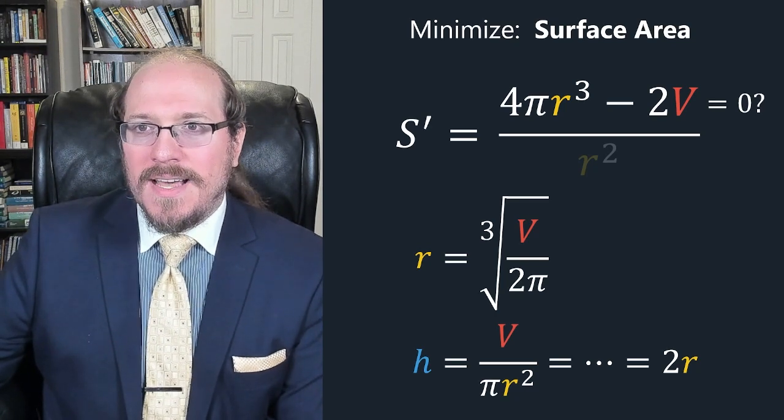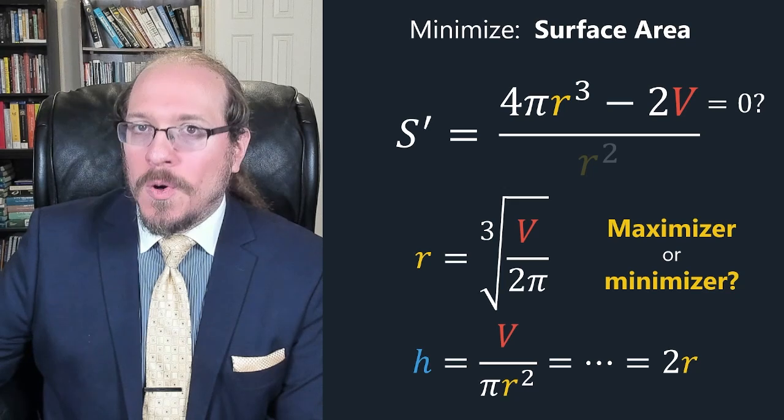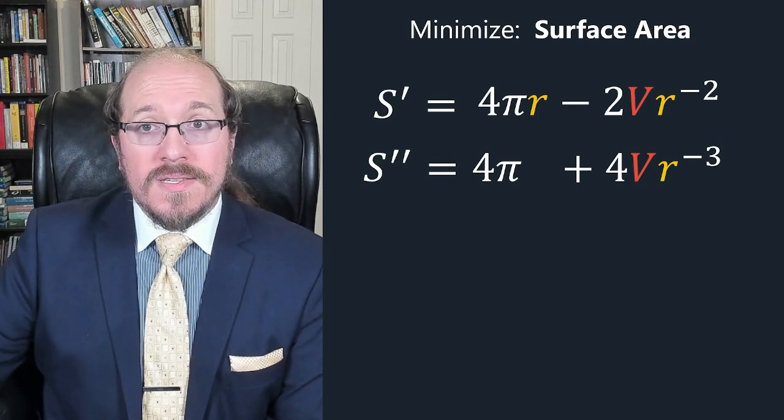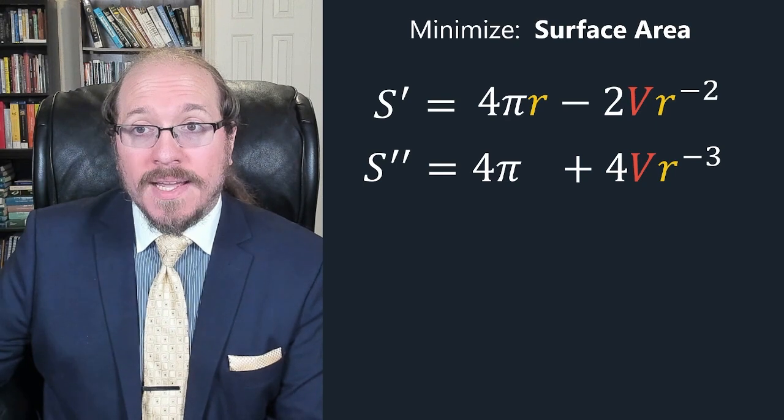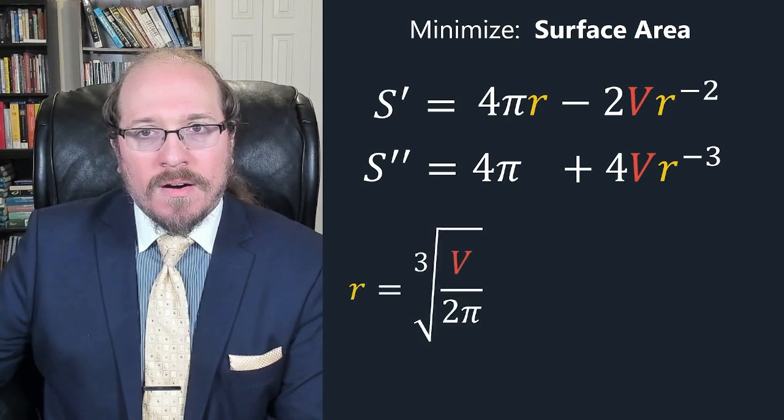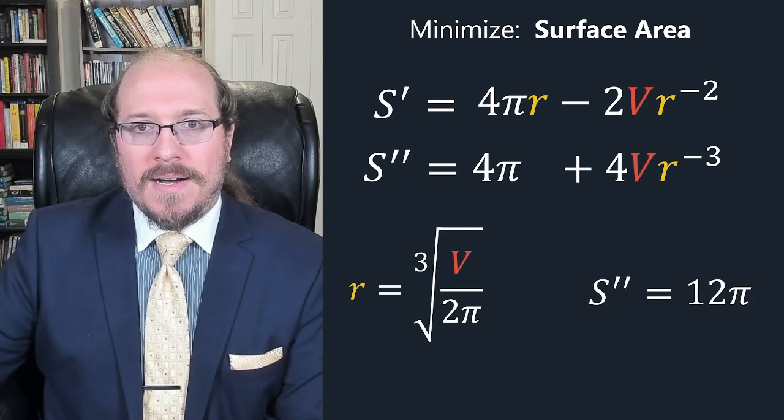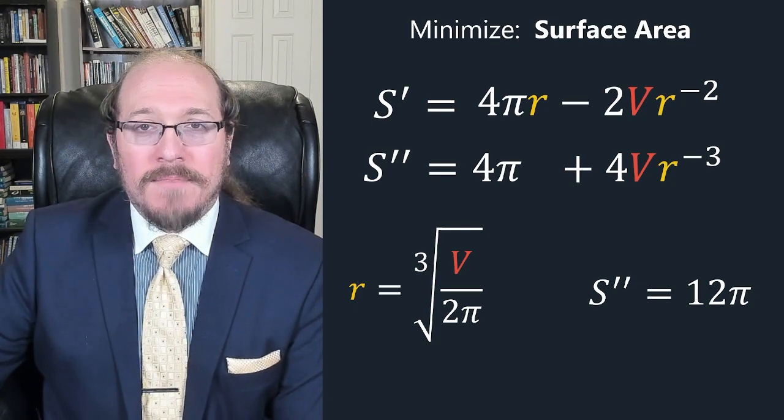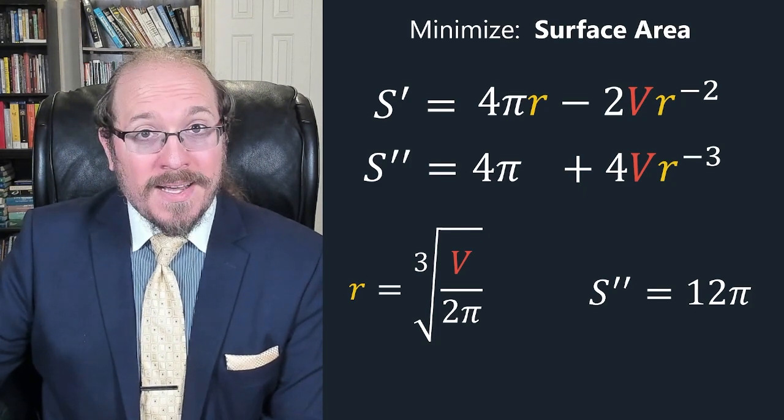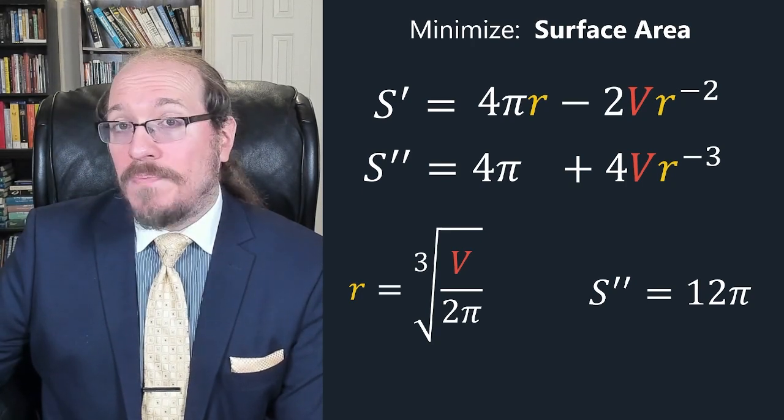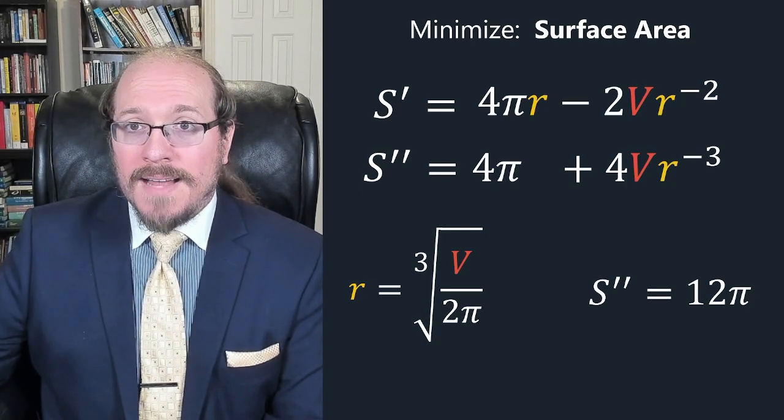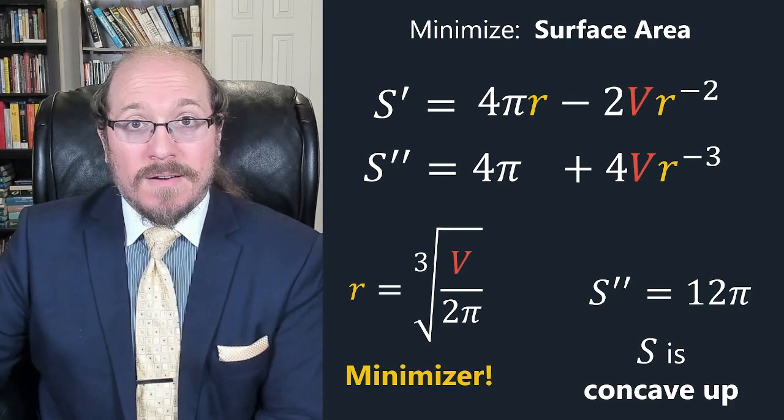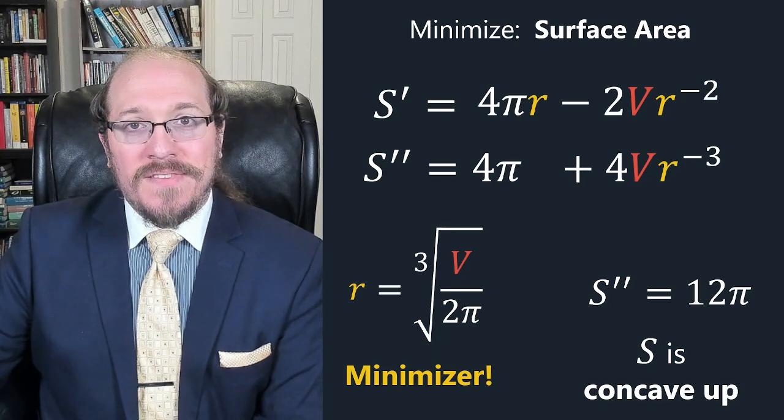But wait a minute we do have to check is that value of r a maximizer or a minimizer? Well if we take the second derivative of surface area we get 4π plus 4V r^(-3). Plugging in cube root of V over 2π for r we end up getting S'' equals 12π. Again take a moment to work this out for yourself. Don't just take my word for it. Okay 12π. So what? Well 12π is positive. Since the second derivative is positive at our critical value that means the graph of surface area should be concave up and that means r is a minimizer. That is our surface area is at a local minimum. That's the second derivative test in action.